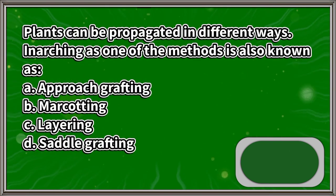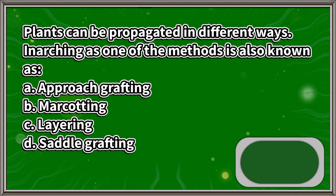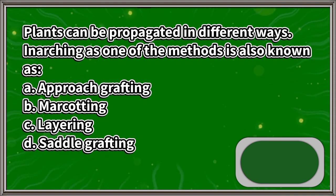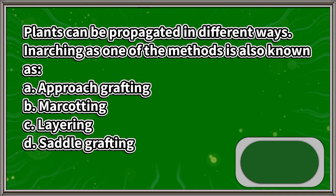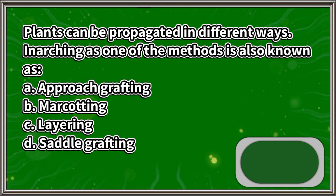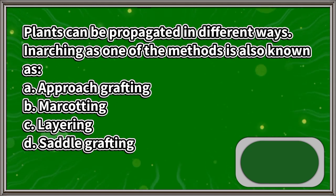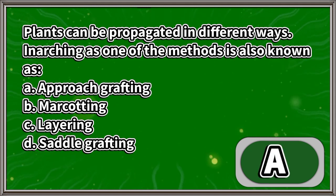Plants can be propagated in different ways. Anarching, as one of the methods, is also known as: A. Approach grafting, B. Marcotting, C. Layering, D. Saddle grafting. The answer is letter A.